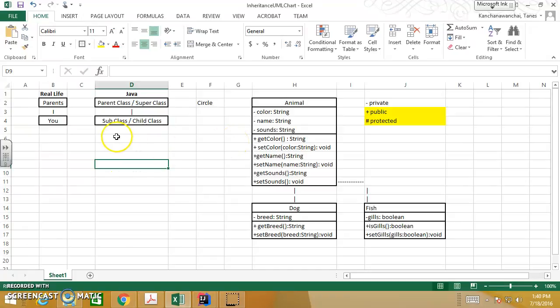Again, inheritance is creating a new class from an existing class. The benefit is you don't need to reinvent the wheel. Dog has name, sounds, and color. You just extend and you get them all, and just add the breed as new attributes. Same as fish.